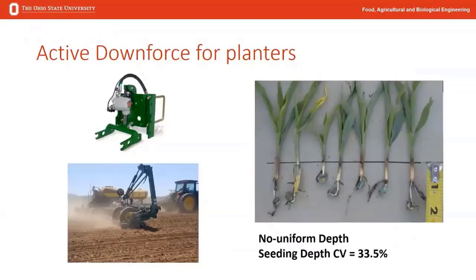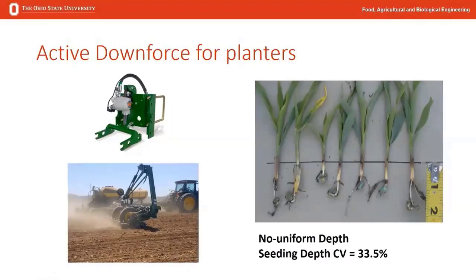Another thing we've done quite a bit of research on here at Ohio State is active downforce. This planter has hydraulic downforce on each individual row, maintaining a certain pressure that is measured and fed back to the operator. What we have found with active downforce on larger planters — 16, 24, 36 row planters — is that field conditions vary in terms of soil texture and moisture at planting. Active downforce, being a quick response mechanism, maintains good seed-to-soil contact and also maintains more uniform seed placement depth.